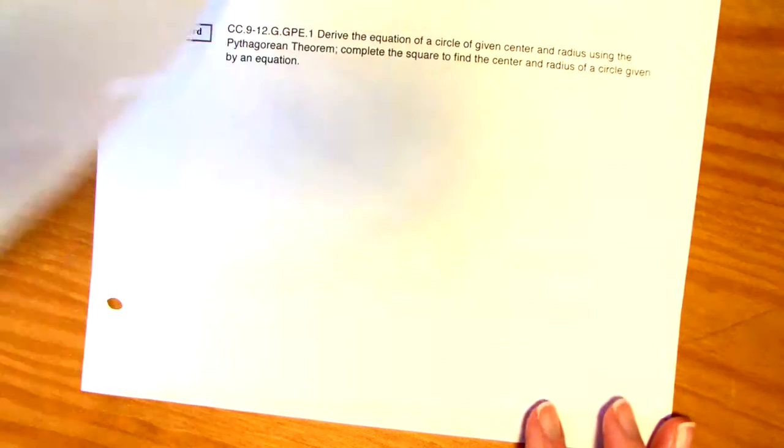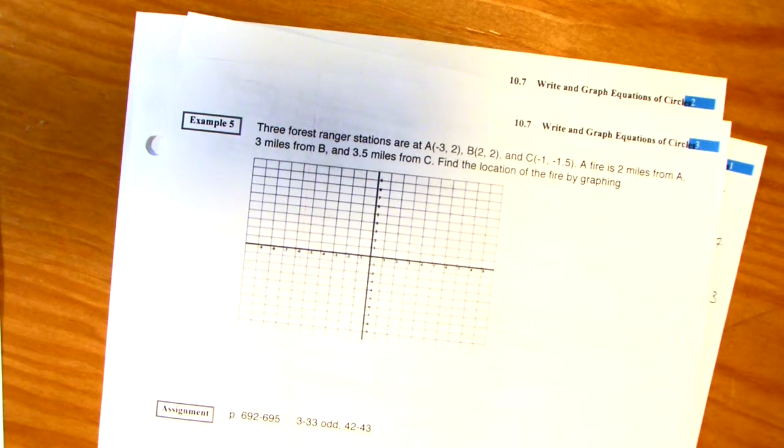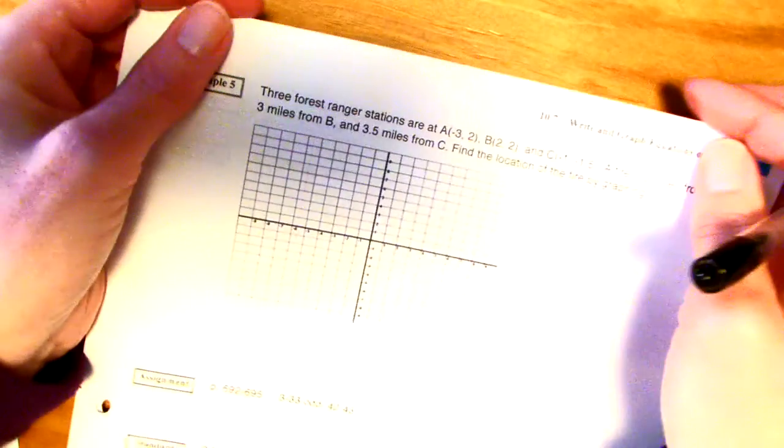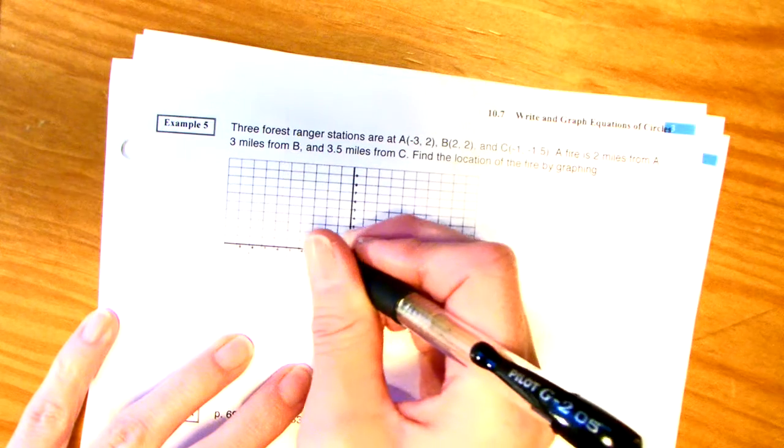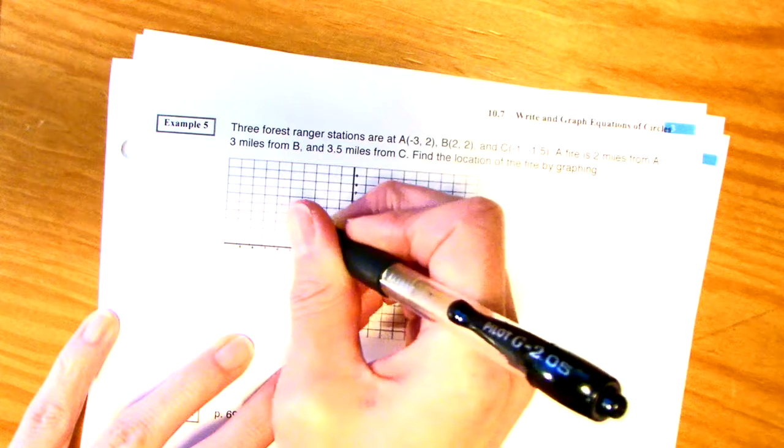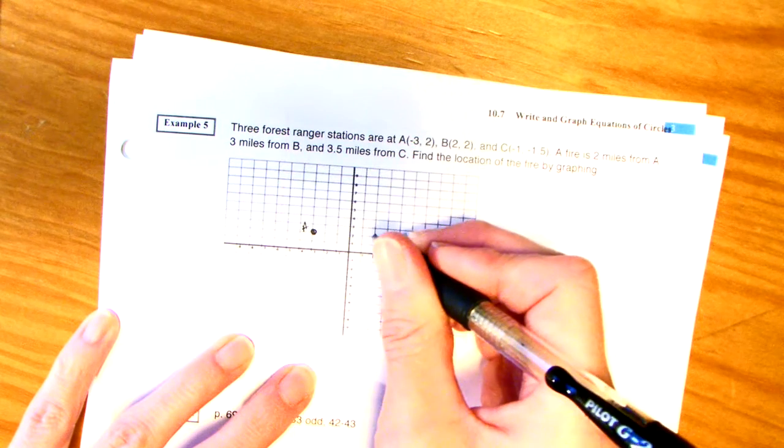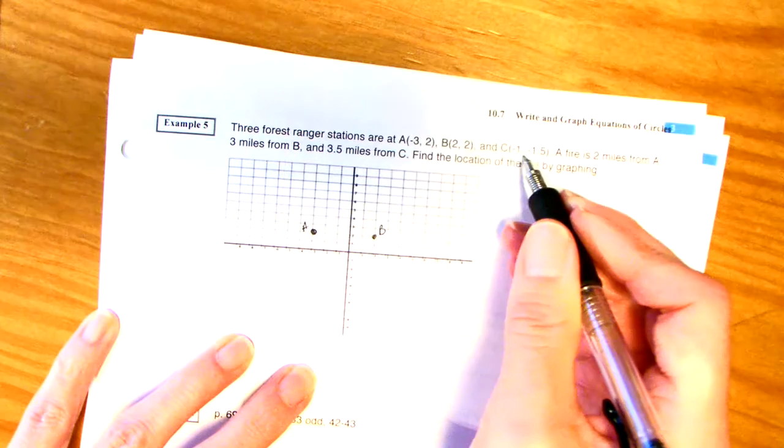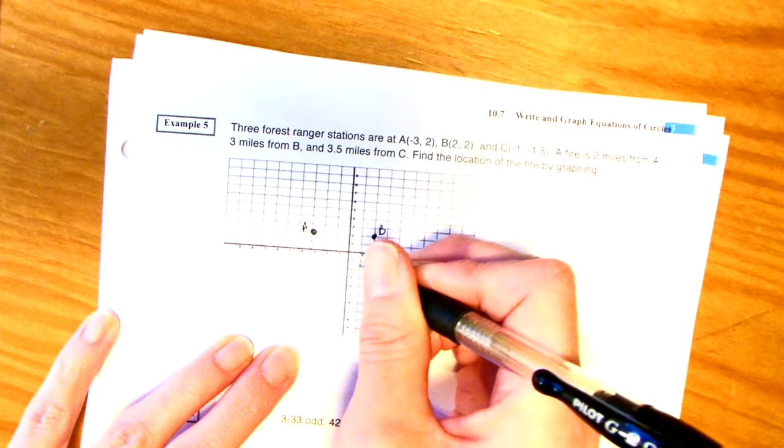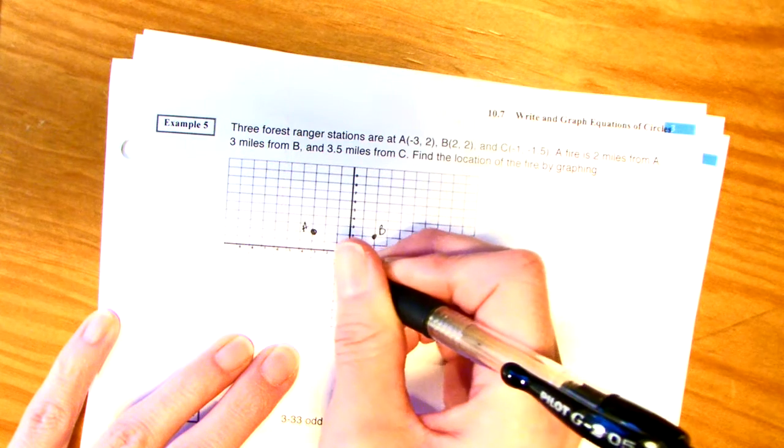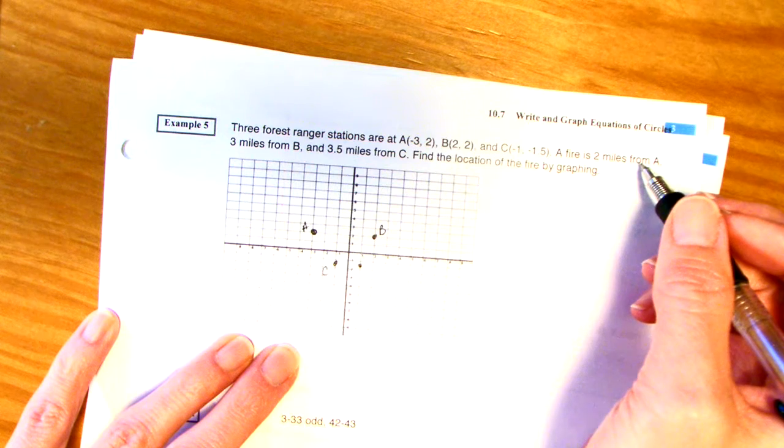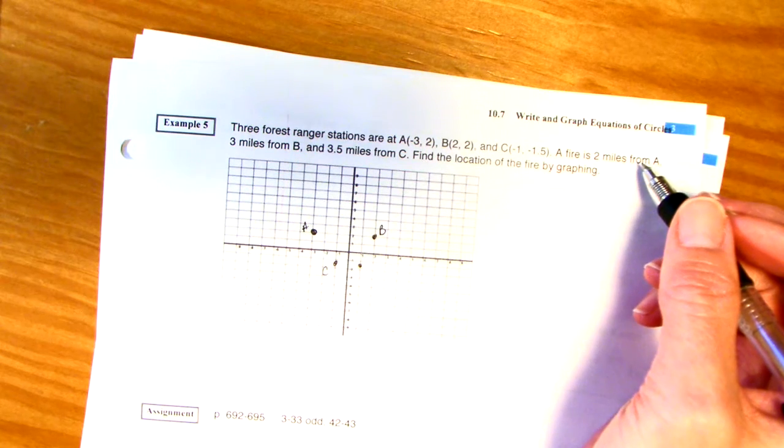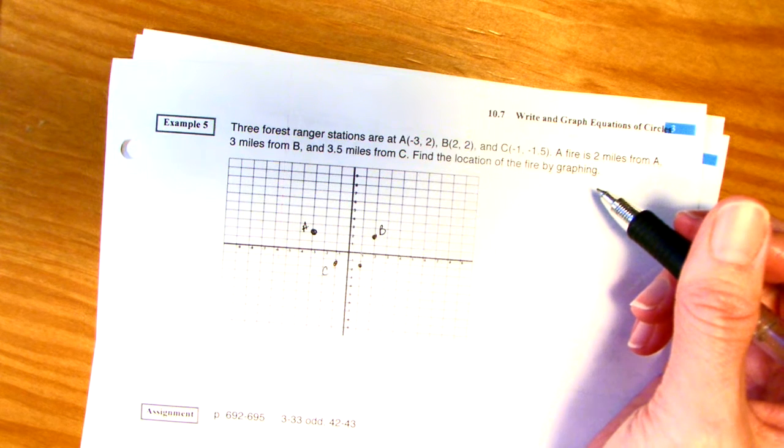But, of course, there is more stuff you could do with this. But, you'll do that in algebra 2. Last problem. It's kind of cool. I'm going to use different colors for this one. You'll see why. 3 ranger stations are at negative 3, 2. That's A. 2, 2. That's B. And then, negative 1, negative 1 and a half. That's C. A fire is 2 miles from A. 3 miles from B. And 3 and a half miles from C. Find the location of the fire by graphing.